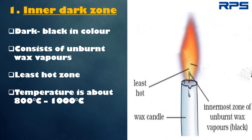The inner dark zone is the innermost zone, which is dark black in color and consists of unburnt wax vapors. It is the least hot zone, with a temperature of about 800 to 1000 degree Celsius.